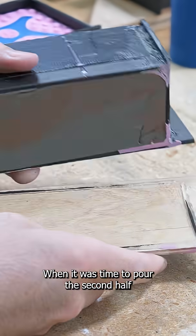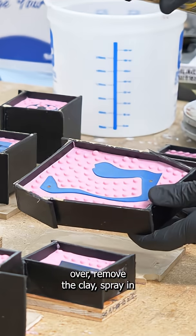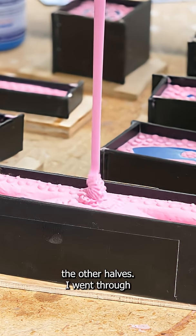When it was time to pour the second half of the molds I could flip them over, remove the clay, spray in some mold release, and pour the other halves.